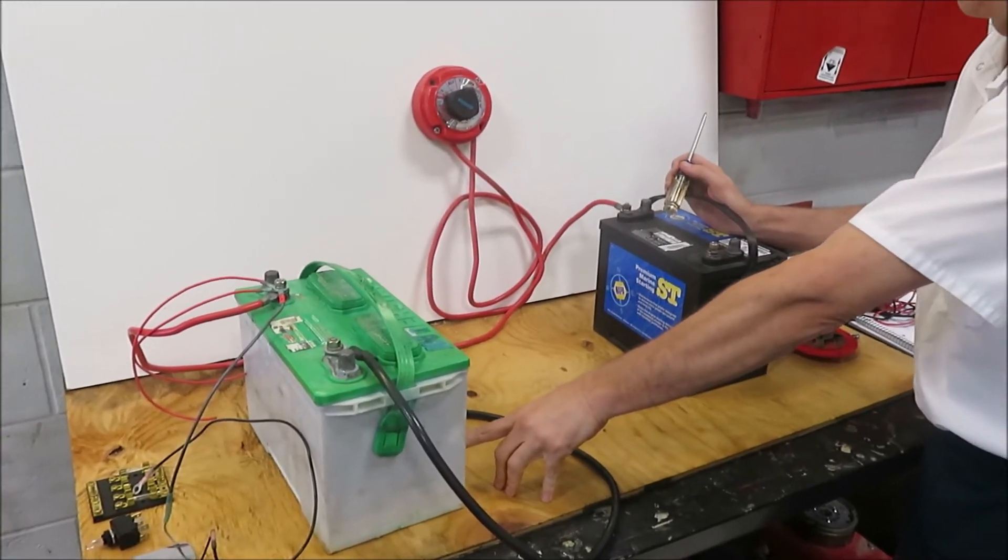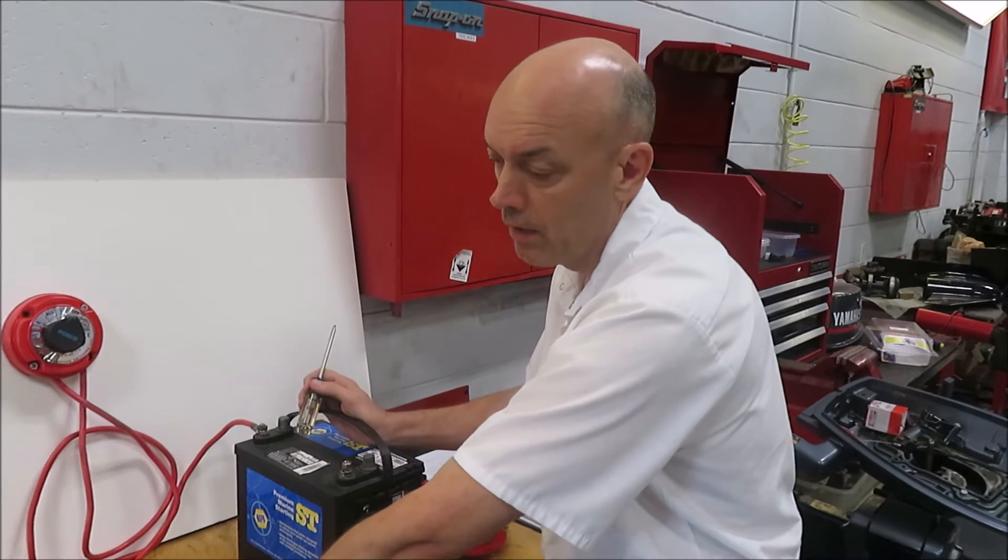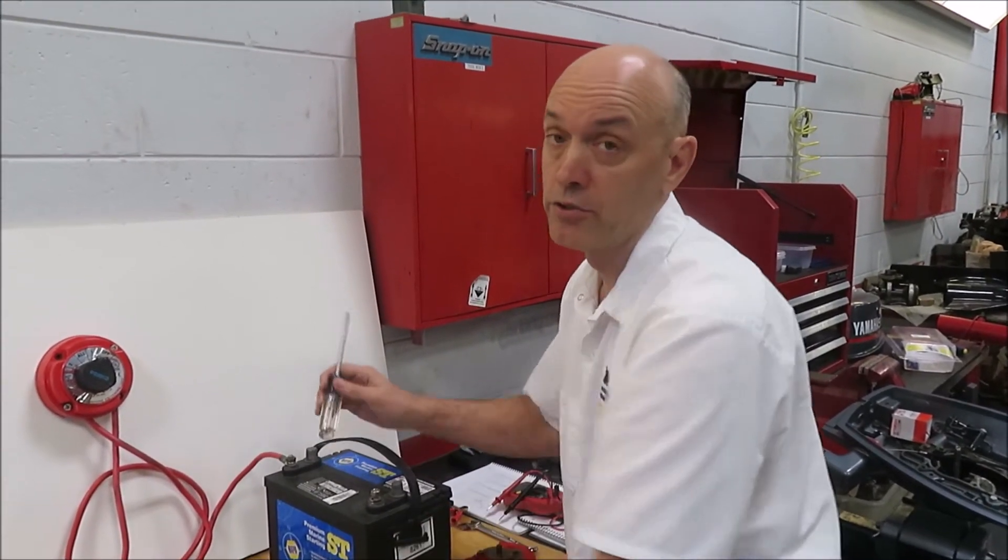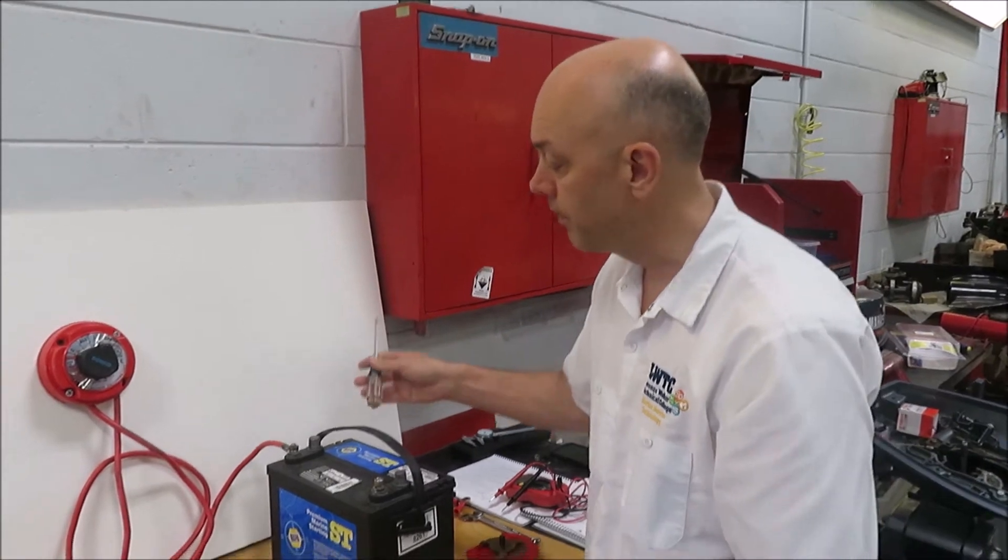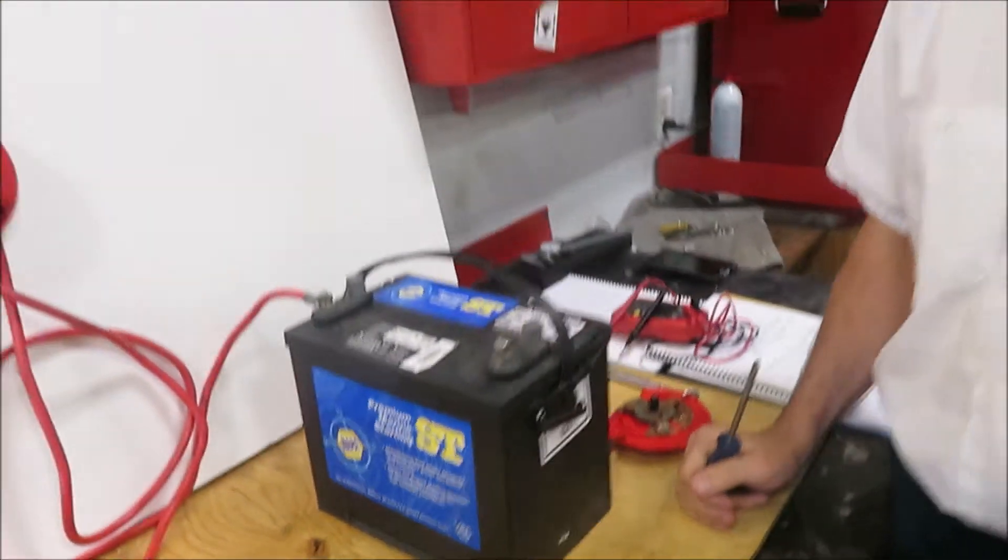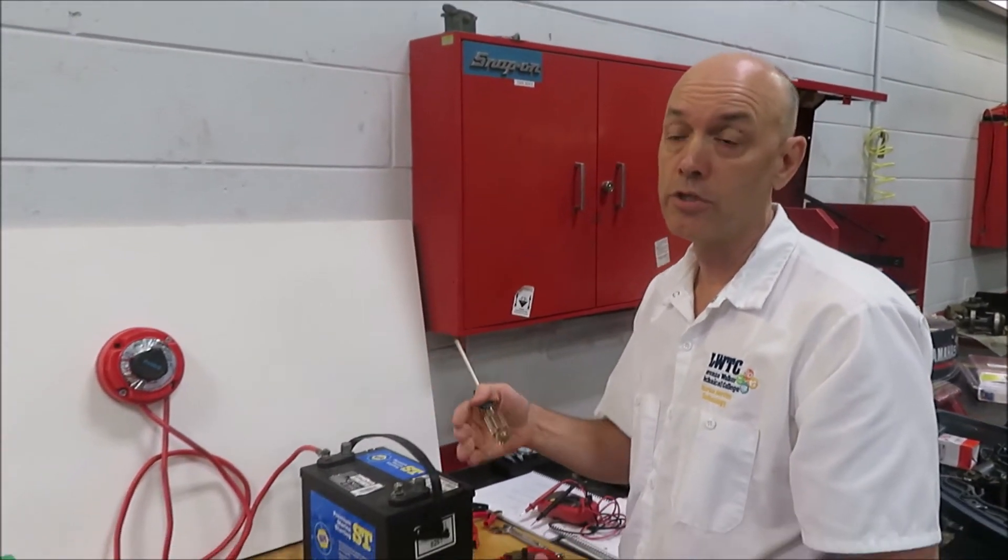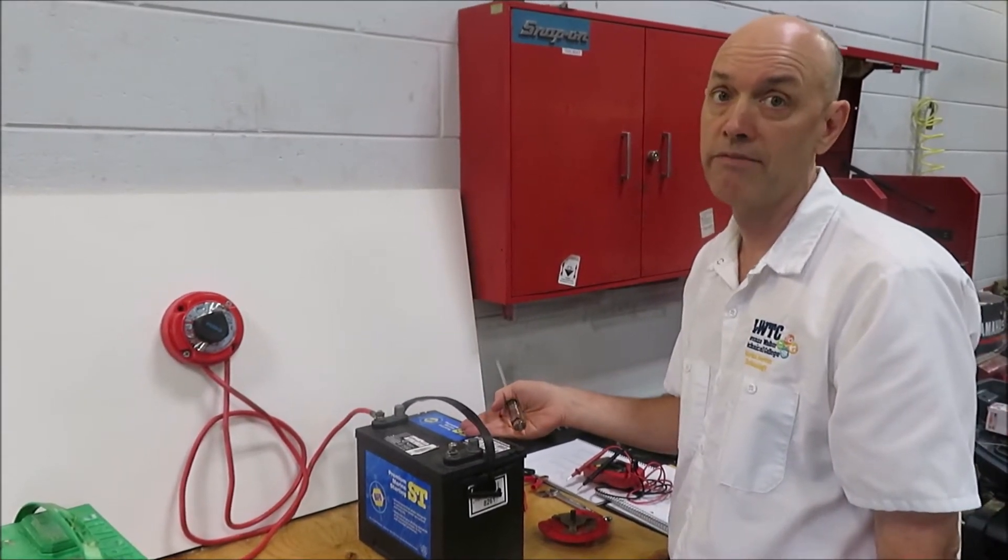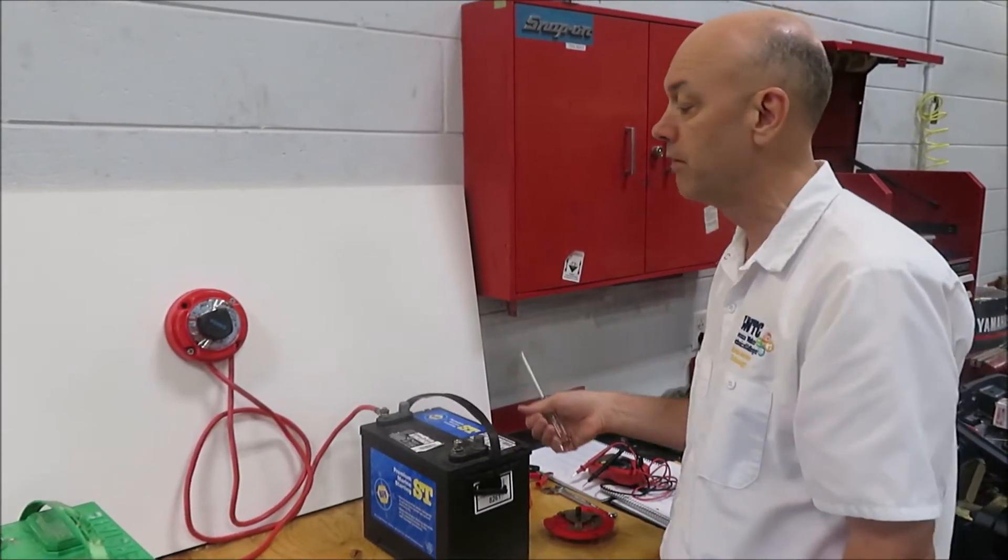And that's normally going to be a deep cycle battery designed for producing low amperage over a long period of time versus your starting battery, which is going to produce high amperage to start the engine, actually turn the engine over, but only for a short period of time. This only needs to turn for three to five seconds in order to get the battery started.